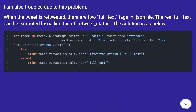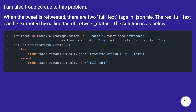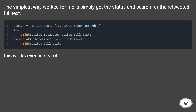I am also troubled by this problem. When the tweet is retweeted, there are two full_text tags in the JSON file. The real full_text can be extracted by calling the tag of retweeted_status. The simplest way that worked for me is to get the status and search for the retweeted full text. This works even in search.